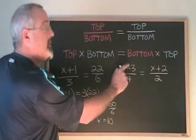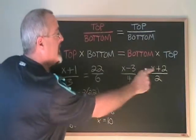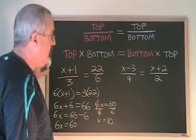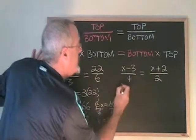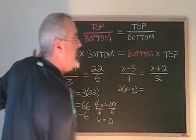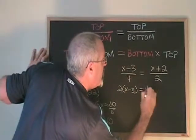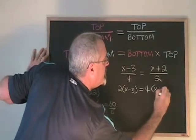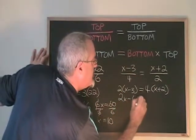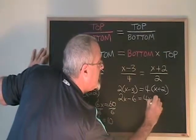Over here, we have two algebraic expressions occupying two of the positions. And this can still be solved with cross multiplication. Top times bottom becomes 2 times (x-3). Bottom times top becomes 4 times (x+2). This simplifies to 2x minus 6 equals 4x plus 8.